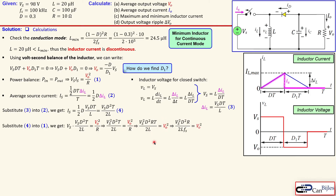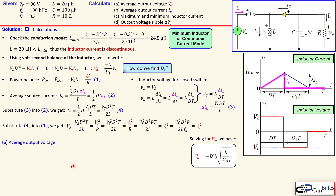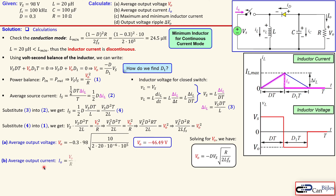We have two solutions: one with a minus sign and one with a plus sign. Since the buck boost converter is inverting, we take the minus sign. The output voltage Vo is therefore a function of duty cycle, input voltage, resistor, inductor, and switching frequency. Substituting the values gives an average output voltage of minus 46.49 volts. The average output current is calculated using Ohm's law, giving minus 4.649 amps.